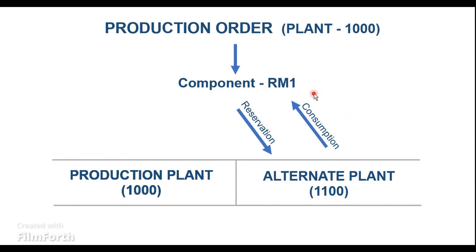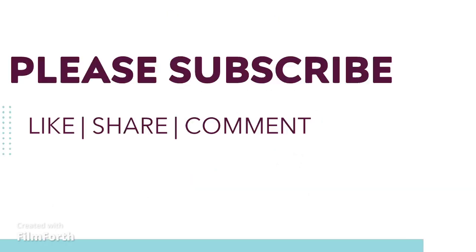So we are always going to procure and stock this raw material RM1 in plant 1100. We don't want to do a stock transfer between 1100 and 1000. Instead, I would like to basically consume the raw material from the 1100 plant itself. So let's see in SAP.